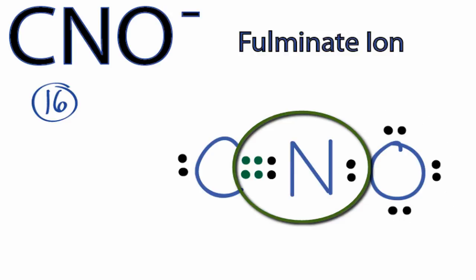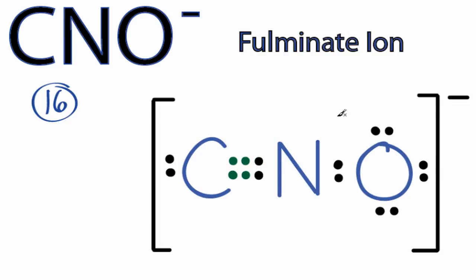One thing we do need to do, since it's an ion, is put brackets and a negative sign around it to show that it's an ion. If we check the formal charges, we'll see that when we add them up, we have a negative charge. That makes sense because this is negative. So our net charge for the formal charges is negative one.